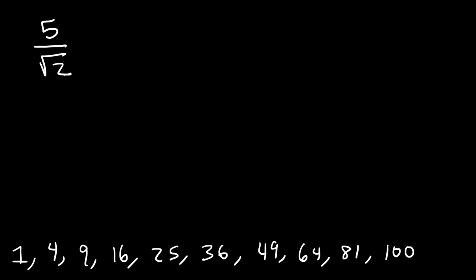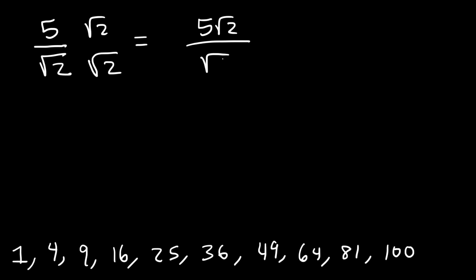If you're asked to simplify a fraction like 5 divided by the square root of 2, all you can do is rationalize the denominator. To do that, multiply the top and the bottom by the square root of 2. On top you get 5 square root 2. On the bottom, the square root of 2 times the square root of 2 is the square root of 4, which is 2. So the final answer is 5 square root 2 divided by 2.